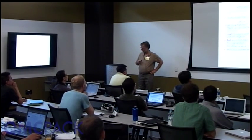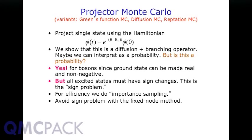These are actually variants — projector Monte Carlo is the overarching name, originally called Green's function Monte Carlo. Diffusion Monte Carlo is a particular variant, and there's another called reptation Monte Carlo which we won't cover much. QMCPACK has that capability. The idea: Phi here is a many-body wave function, and this argument is imaginary time.